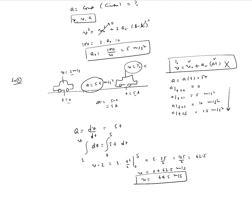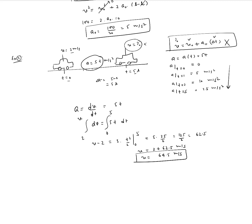The car goes from 2 m/s to 64.5 m/s. Notice we did not use Galileo's equation — we went back to the basic definition of acceleration and integrated to find velocity. If you mistakenly use Galileo's equation, you will get a different and incorrect answer.